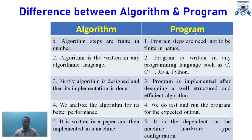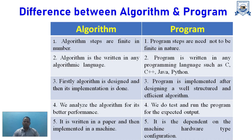An algorithm is first designed and then its implementation is done. The program is implemented after designing a well-structured, efficient algorithm — that happens at implementation time. We analyze the algorithm for better performance and can improve it based on complexities. For a program, we simply test and run it to check for the expected output.